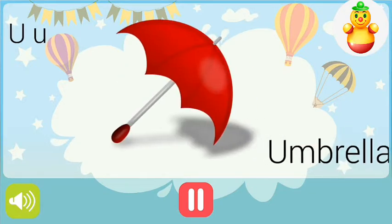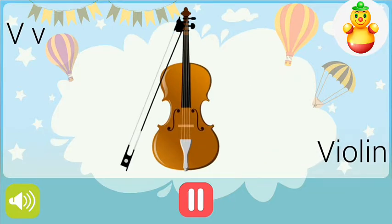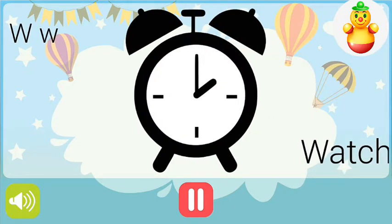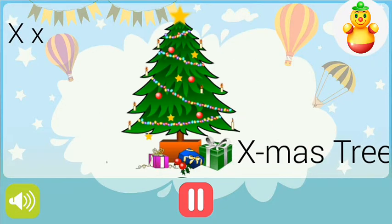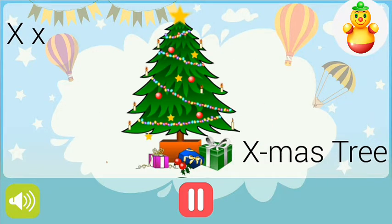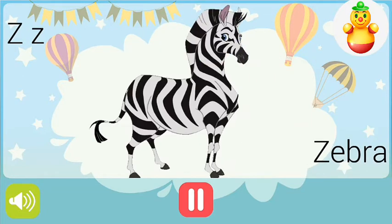U for umbrella, V for violin, W for watch, X for x-moss tree, Y for yak, Z for zebra.